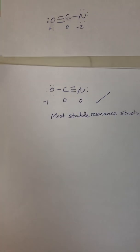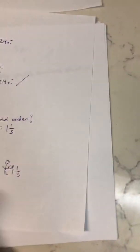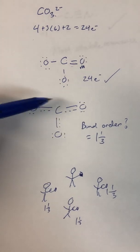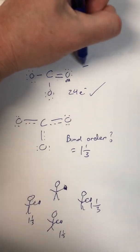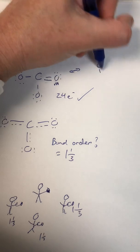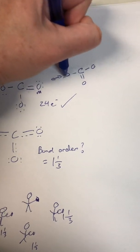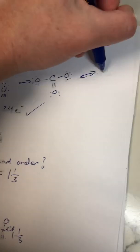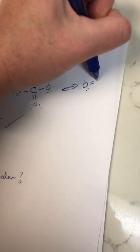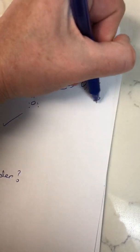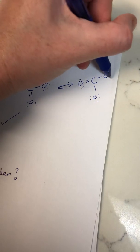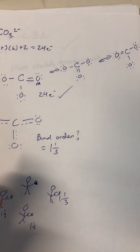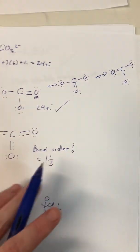Going back to carbonate, this ion really does have resonance structures. For example, you could draw carbon to oxygen to another oxygen to another oxygen with all the electrons, and then draw another one where the double bond oxygen is in a different position. All of these are resonance structures of carbonate, but they're all really identical because the electrons are delocalized and moving around.